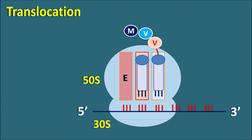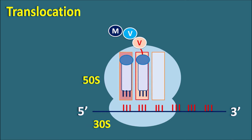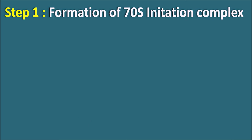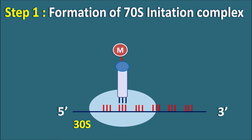The next step is translocation. The peptide chain formed by transpeptidation must be transported to the P site so that new tRNA can attach to the A site. In translocation, the peptide chain is transported from the A site to the P site. One important drug acting on the initiation step is linezolid, which belongs to the oxazolidinones and inhibits the formation of the 70S initiation complex.